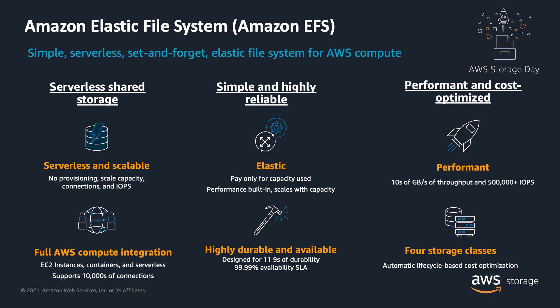These clients could be traditional EC2 instances, containers running in one of your self-managed clusters or in one of AWS container services such as ECS, EKS, and Fargate, or in serverless functions running in AWS Lambda. You can also access your file systems from on-prem via AWS Direct Connect and AWS VPN. In terms of performance, EFS file systems provide consistent latencies in a single-digit millisecond range for active file system workloads and can scale up to tens of gigabytes of throughput and support over 500,000 IOPS.